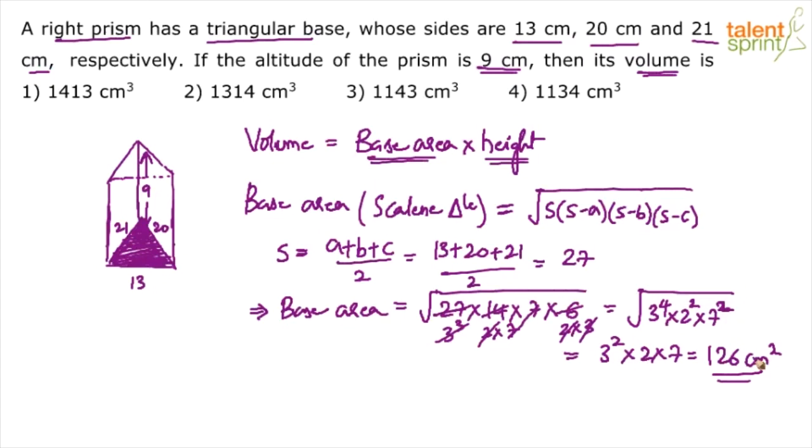But what is needed is the volume. So substitute volume will be equal to 126 into the height. Height is given as 9. So what is 126 into 9? 1260 minus 126. 1260 minus 126 is 1134. So 1134 centimeter cube would be the answer.